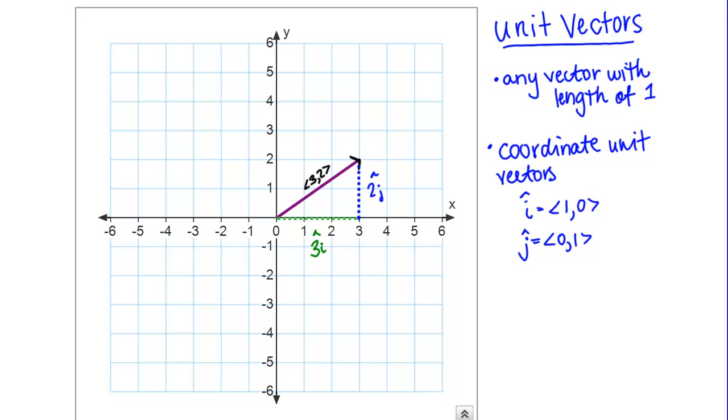Then what I've done on the sides of the triangle here is I have split this up into its x and y components. The green dotted line along the x axis I can call that vector 3i. Remember, i is a unit vector in the x direction with an x component of 1 and a y component of 0. Then 3i would just have an x component of 3 just purely in the x direction.